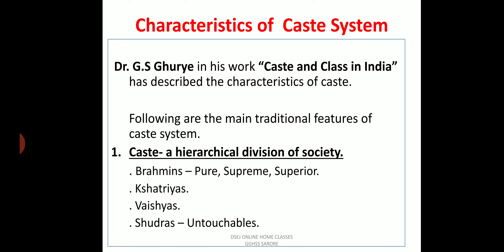Now comes the characteristics of the caste system. Dr. G.S. Ghurye, in his work 'Caste and Class in India,' described eight main characteristics of caste. The first is that caste is a hierarchical division of society — hierarchy means ranking people into different layers: top, bottom, and intermediate.